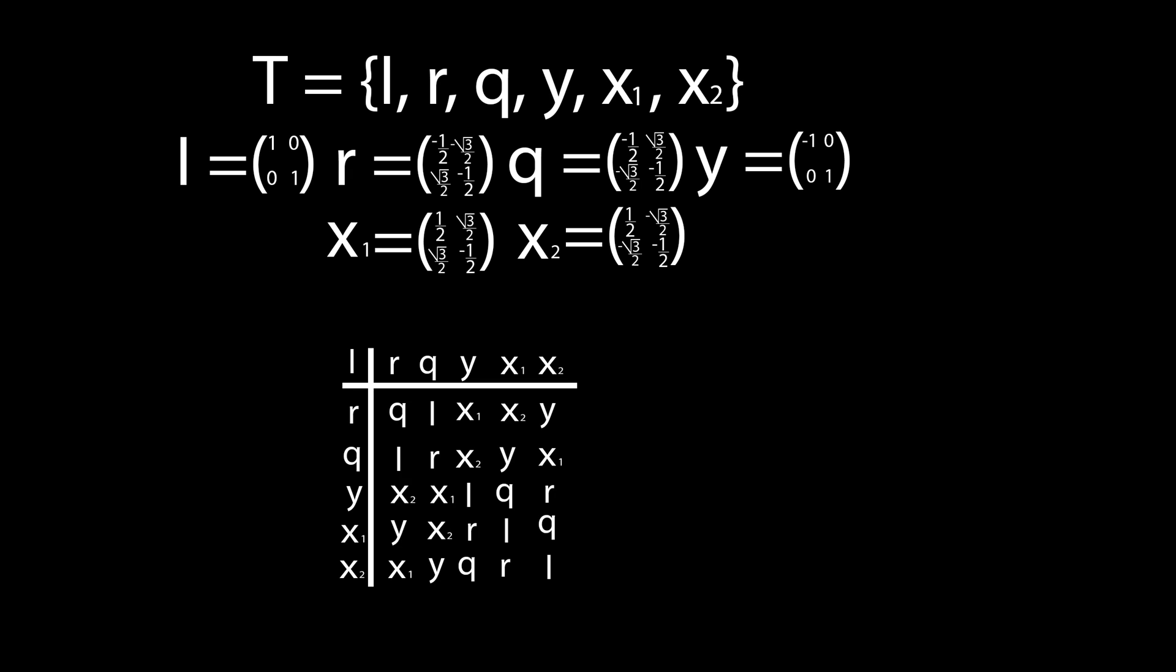Upon working out each of the combination of matrices, we get this Cayley table. The arguments used to show that the previous set forms a group can also be applied directly here. Clearly, this set of matrices under the operation of matrix multiplication forms a group.